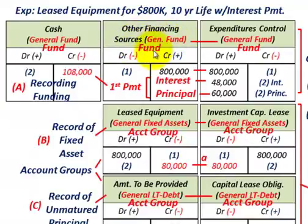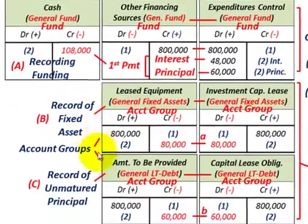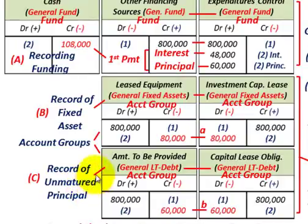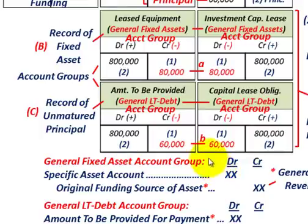Starting with our other financing sources in our general fund — this is under our fund — we're going to credit it for $800,000, the cost of that leased equipment. Then the debit is going to go to our expenditures control under the general fund, debited for $800,000. Now we're going to have to record this leased equipment cost both as a fixed asset and also the unmatured principal on this lease. For recording our fixed asset, we use the general fixed asset account group. The specific asset account — our leased equipment — is debited for $800,000 under the general fixed assets account group.